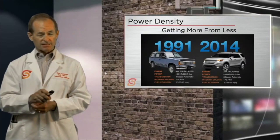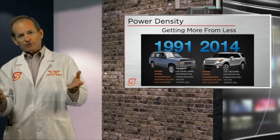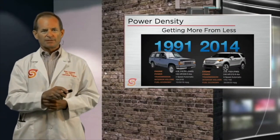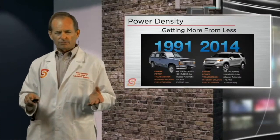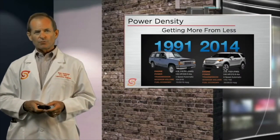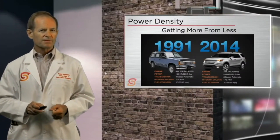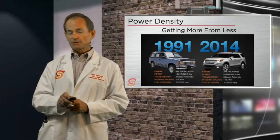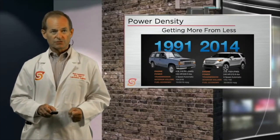That's getting more from less. Looking at combined fuel economy, the 1991 vehicle gave 16 miles per gallon combined, and the 2014 vehicle gives 23 miles per gallon combined — a 43% improvement in economy. That's a pretty remarkable improvement with what these engine makers are doing.